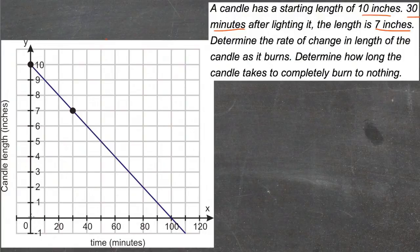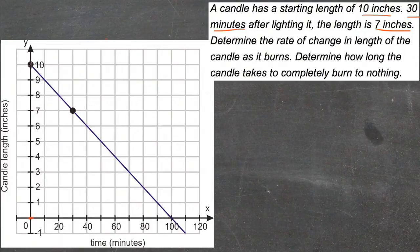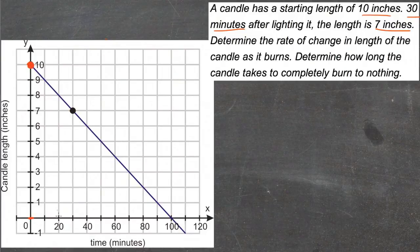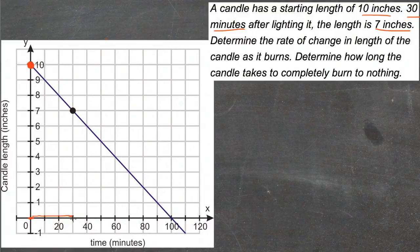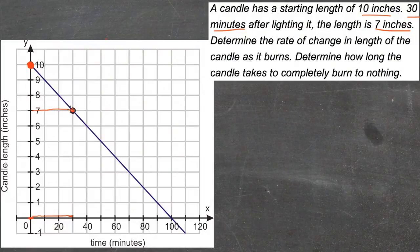At 0 minutes, 0 on the x-axis right here, we have 10 inches length on the candle. So it's 10 inches long when there hasn't been any burning going on at all. Then after the candle is burned for 30 minutes, 30 on the x-axis, the candle shrinks down to 7 inches, so 7 inches length on the y-axis.